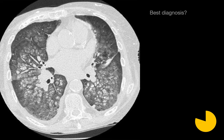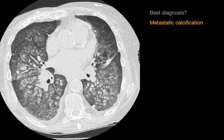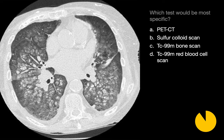What's your best diagnosis for this case? This pattern of a markedly centrilobular distribution of airspace opacities with inner portions approaching the attenuation of bone or calcium is a classic case of metastatic calcification — a condition where calcium deposition occurs within normal lung parenchyma. Which of the four tests listed is most specific for metastatic calcification? The answer is choice C, a technetium-99 bone scan.